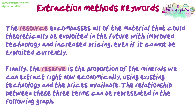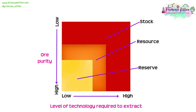The relationship between these three terms can be represented in the following graph. On this graph, we can see the largest square represents the stock — that is all the minerals in the lithosphere. The reserve is the smallest square, as that is what we are currently able to extract with current technology and prices. The resource is slightly bigger than the reserve, because if prices go up and technology improves, then we will be able to access deposits that we don't currently extract from.